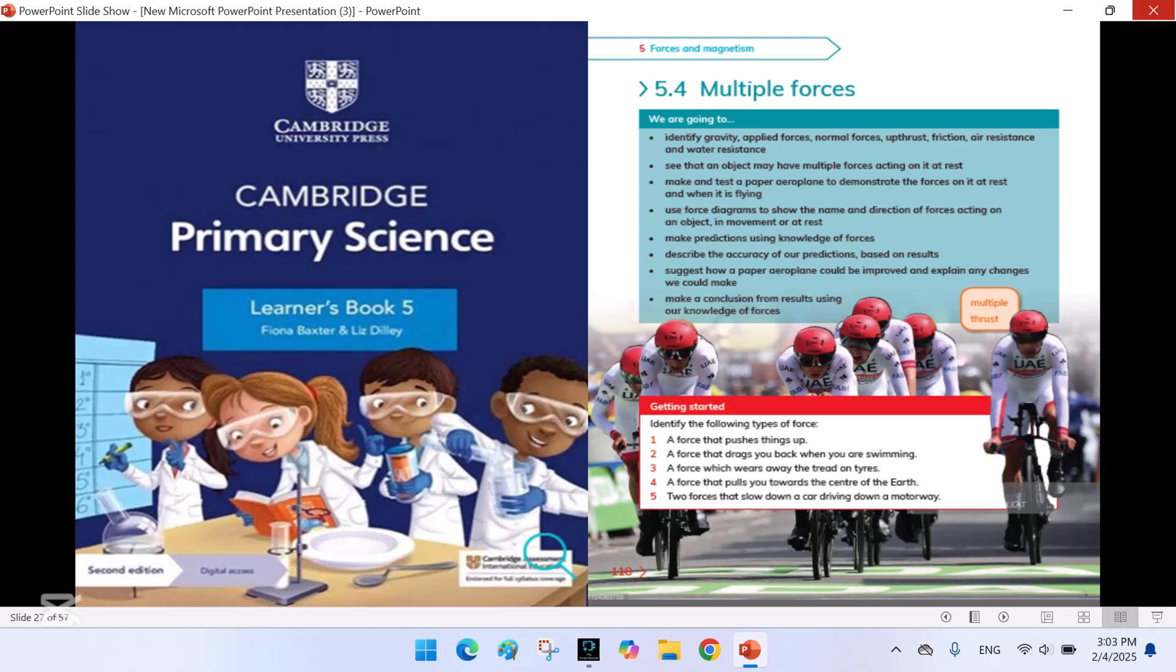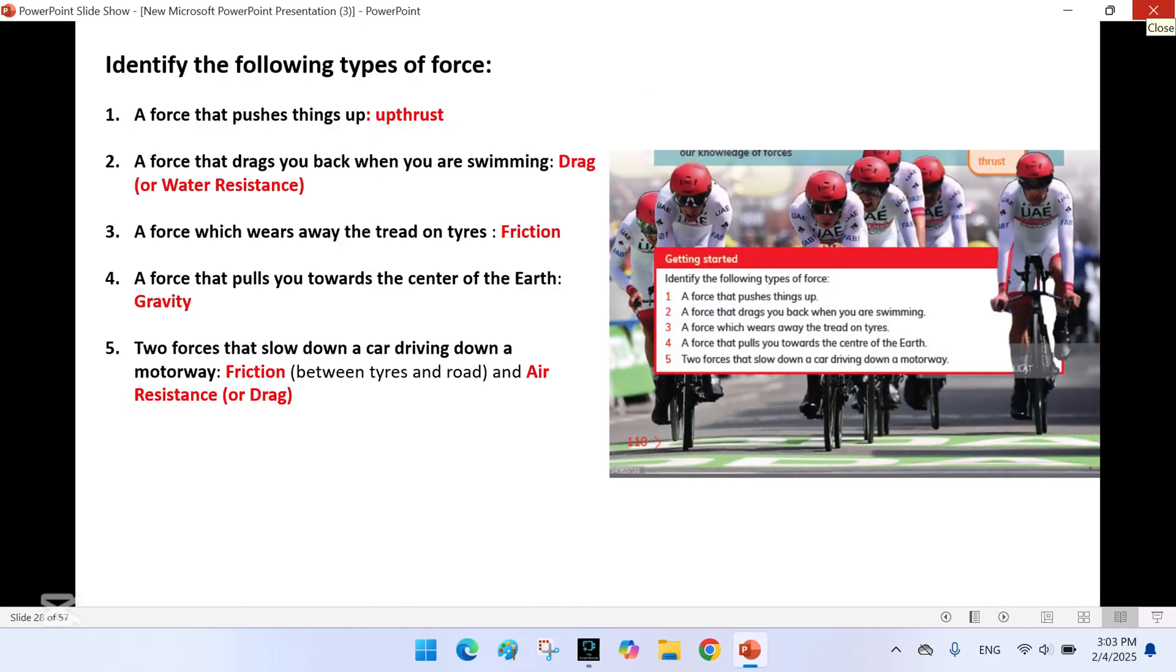5.4 Multiple Forces. Identify the following types of force. A force that pushes things up. It's upthrust. A force that drags you back when you are swimming. Drag or water resistance. A force which wears away the tread on tires. It's friction. A force that pulls you towards the center of the earth. Gravity. Two forces that slow down a car driving down a motorway is friction between tires and road and air resistance or drag.